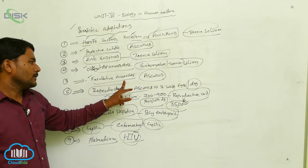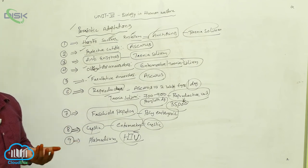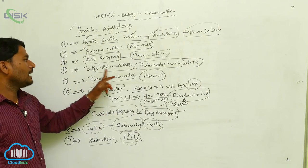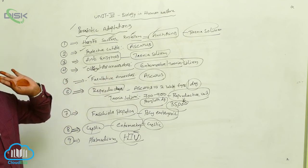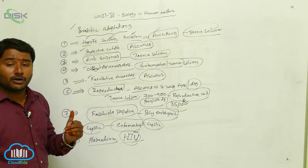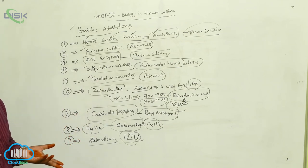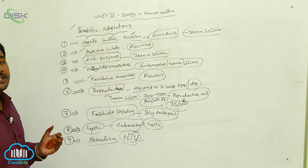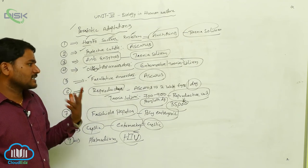Facultative anaerobes, like Ascaris, perform aerobic respiration when oxygen is available and anaerobic respiration when it is not. Obligatory anaerobes perform only anaerobic respiration because mitochondria are absent in them, making aerobic respiration impossible.